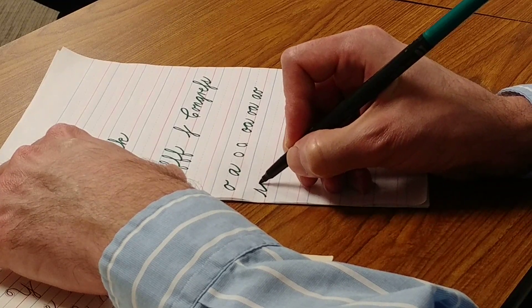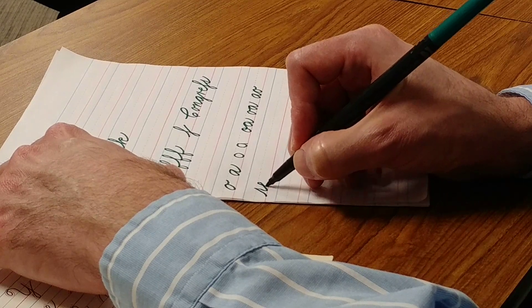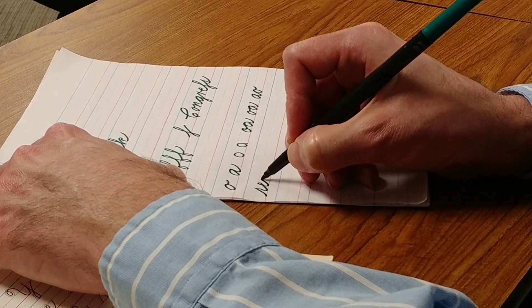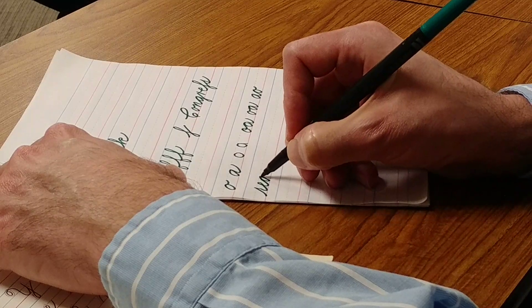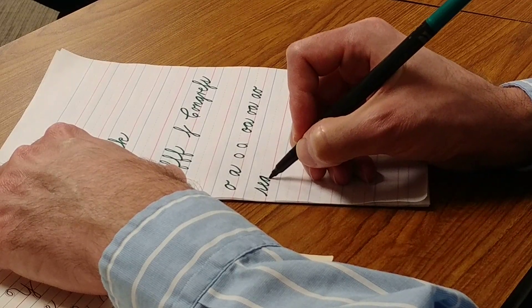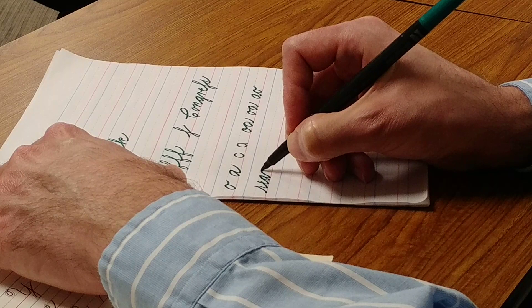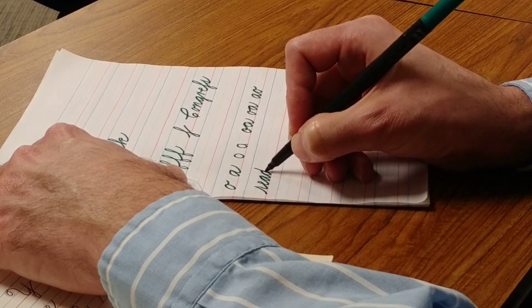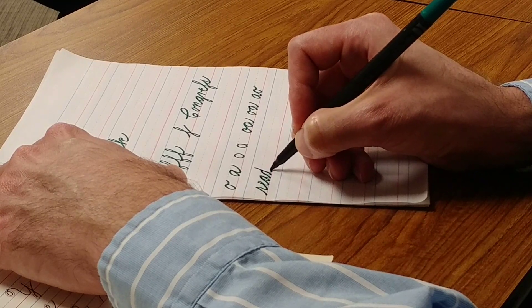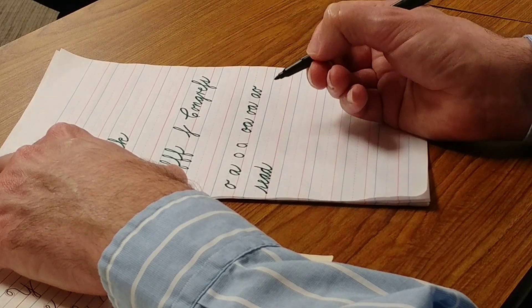I'm going to go on to the letter E, loop back, slant. Under, over, down curve, under curve, slant, under, over, down and under. Retrace, touch the baseline, finish with an under curve.